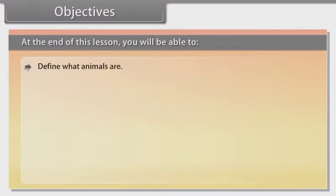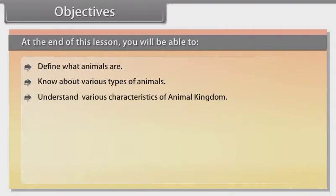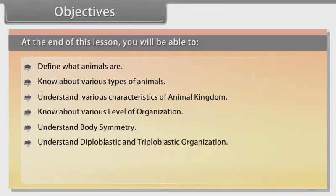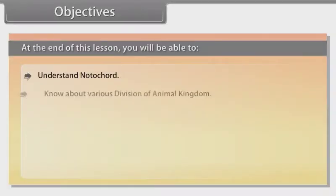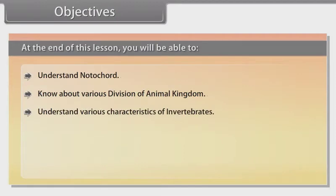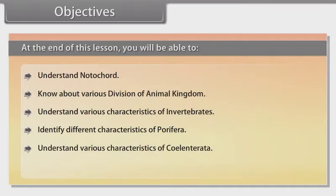At the end of this lesson, you will be able to: define what animals are; know about various types of animals; understand various characteristics of the animal kingdom; know about various levels of organization; understand body symmetry; understand diploblastic and triploblastic organization; know about coelom; understand segmentation; understand notochord; know about various divisions of the animal kingdom; understand various characteristics of invertebrates; identify different characteristics of Porifera; understand various characteristics of Coelentrata; and identify different characters of Ctenophora.